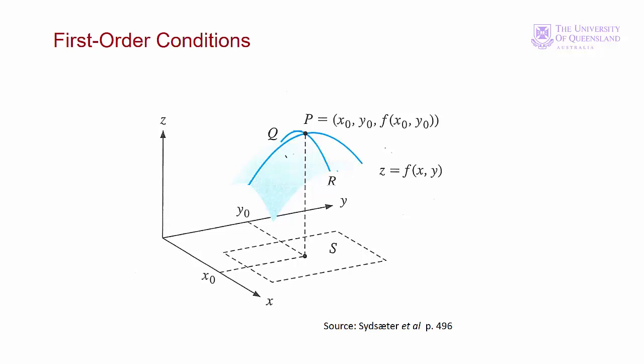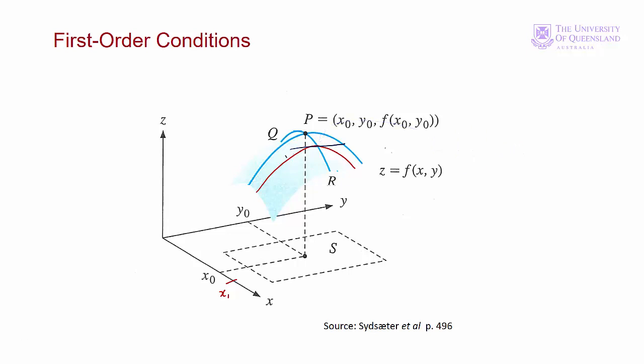We can see that we need both of these conditions if we consider ∂f/∂y at not x₀, but some other value, say x₁. The slope would follow this line. We can see that the tangent at the maximum point of the line is horizontal, so ∂f/∂y equals zero at that point. But ∂f/∂x — the slope of this line — is negative at that point. So when only one of these conditions is met, namely that the first partials are equal to zero, the function won't be at an extreme point.